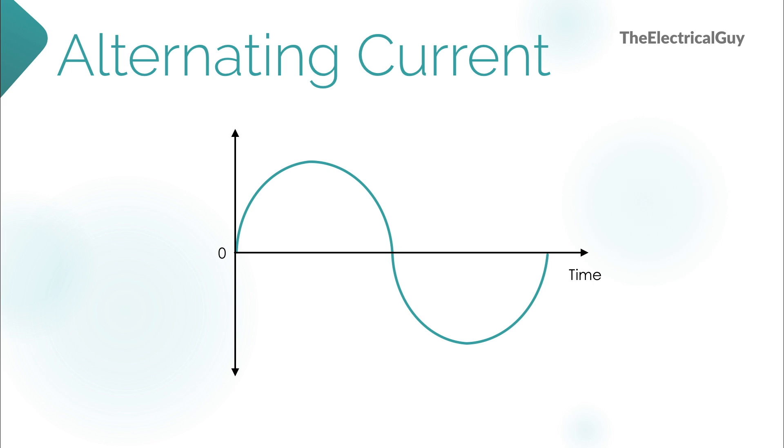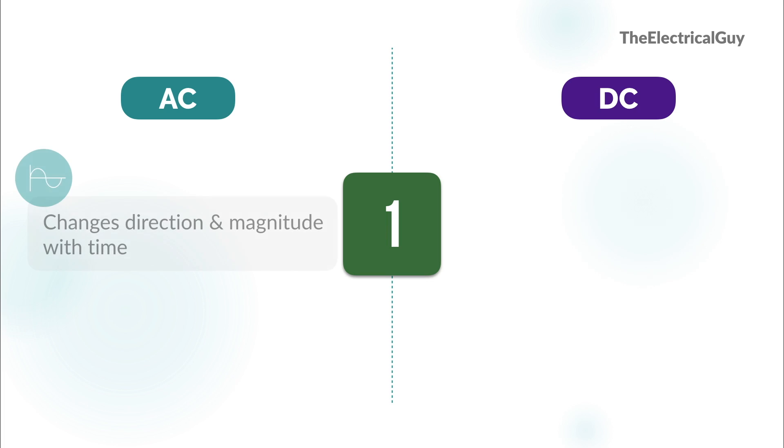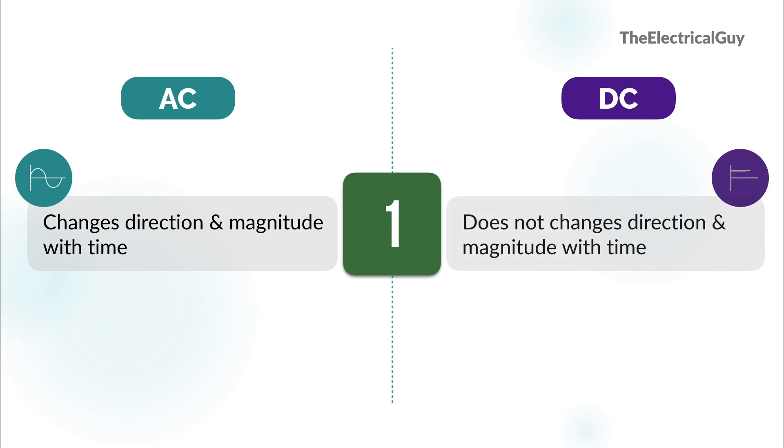If you draw the waveform it will look like this. In similar way, direct current or DC does not change its direction or magnitude with time. It remains constant. So if you draw the waveform it will look like this. So this is our first difference.